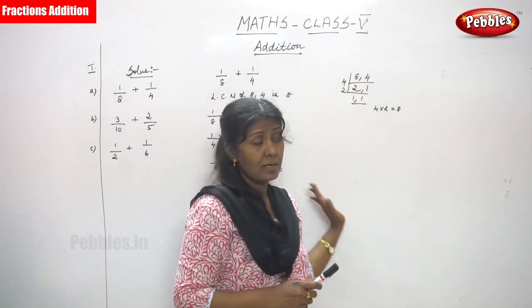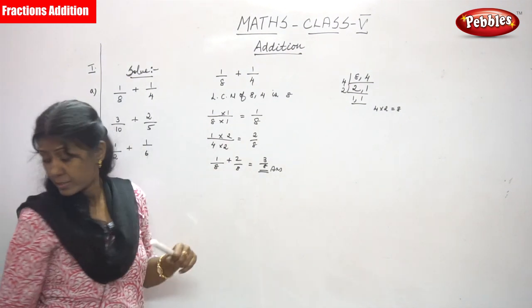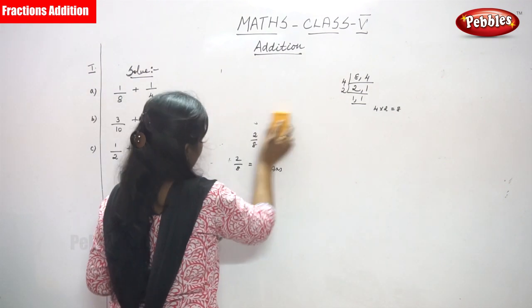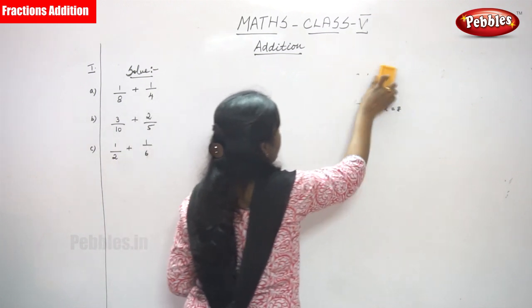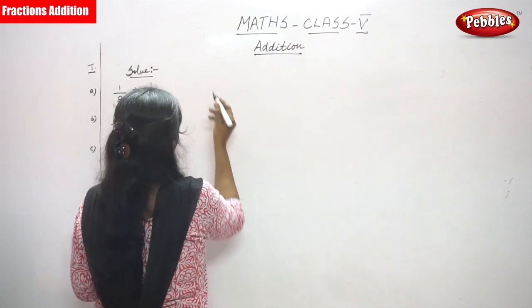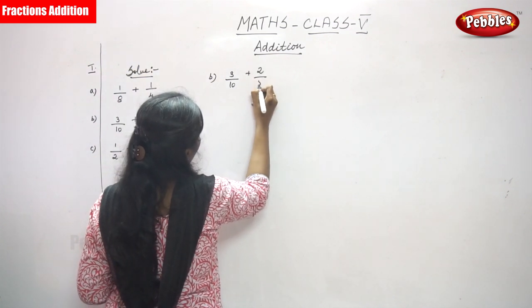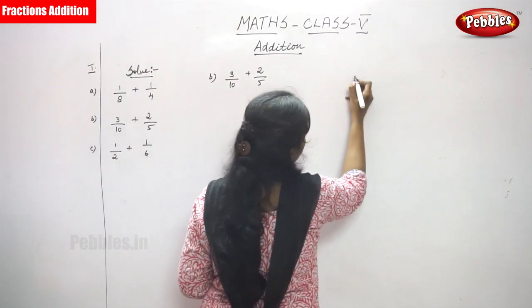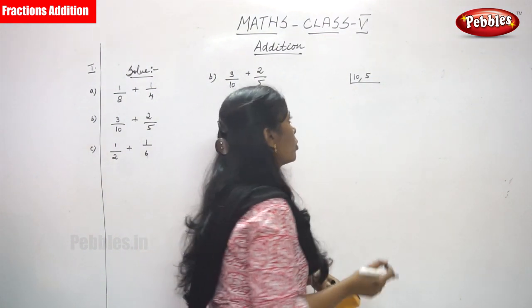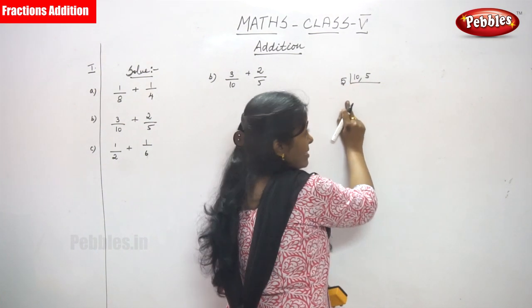The next sum is 3 by 10 plus 2 by 5. The denominators are different, so I have to take the LCM. I take the common divisor, which is 5.